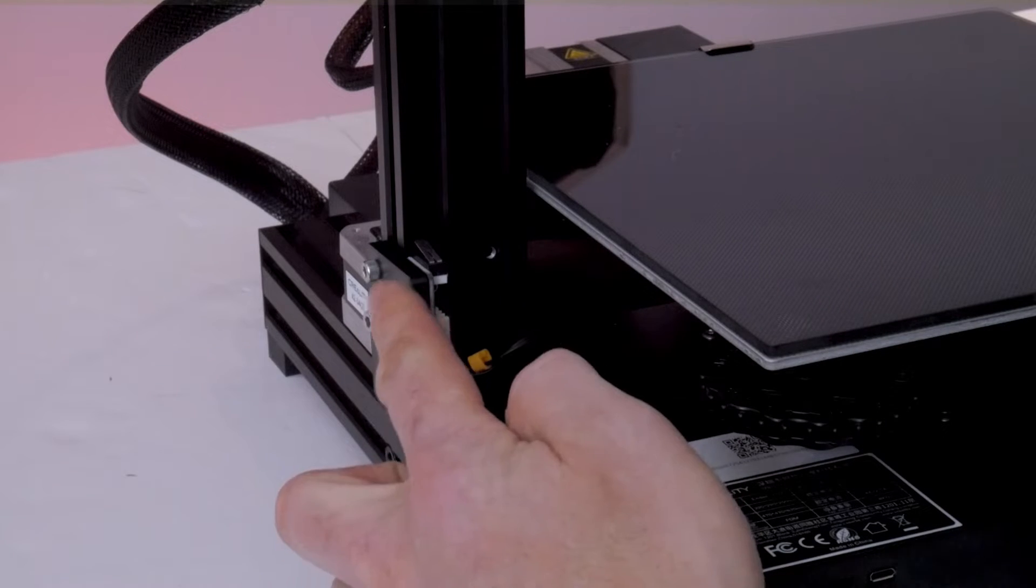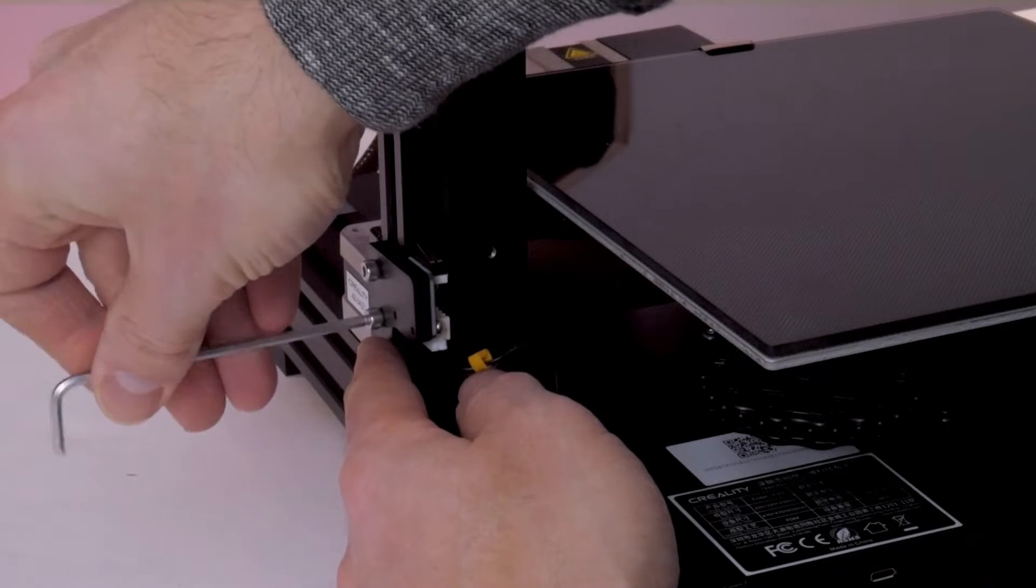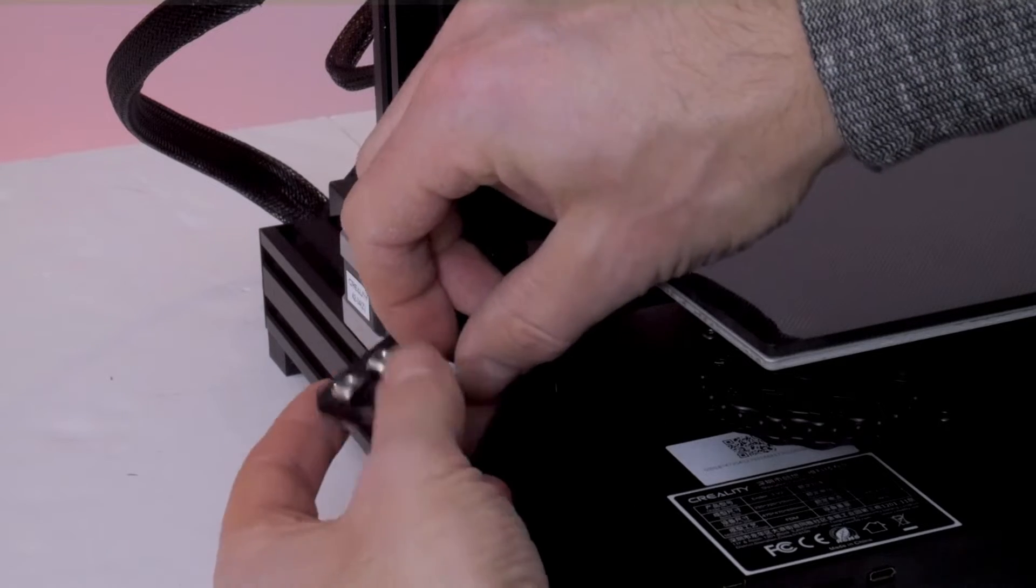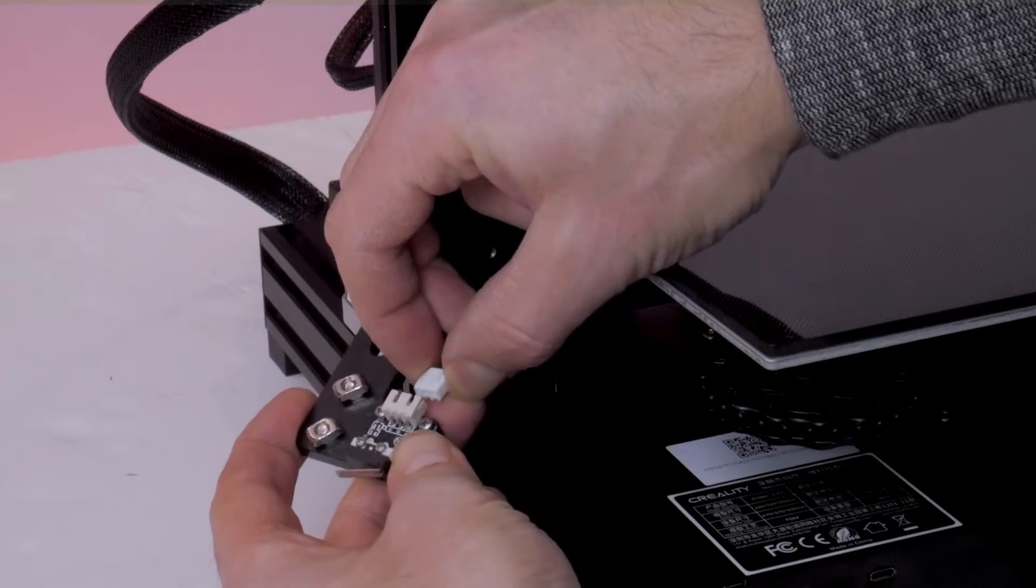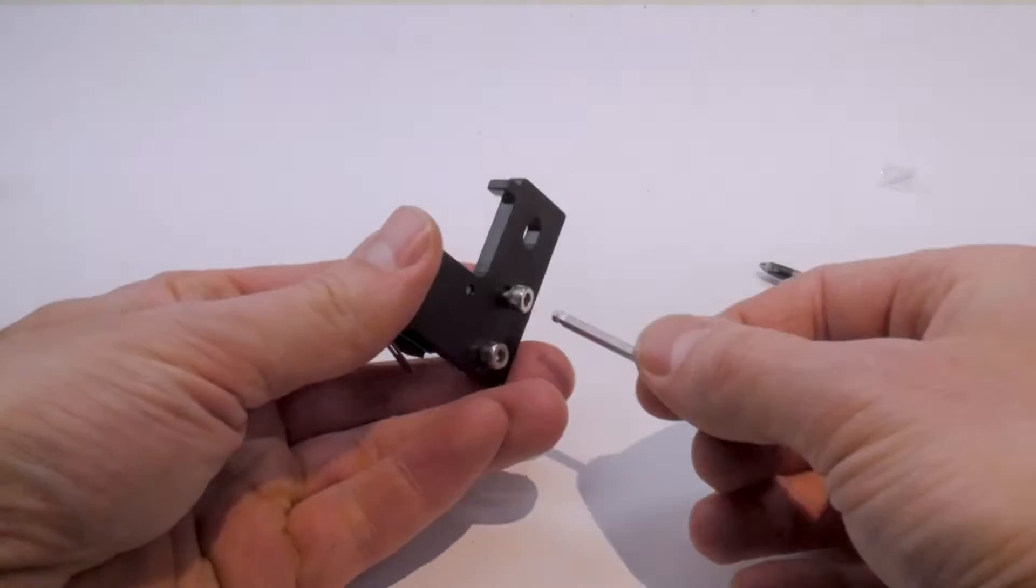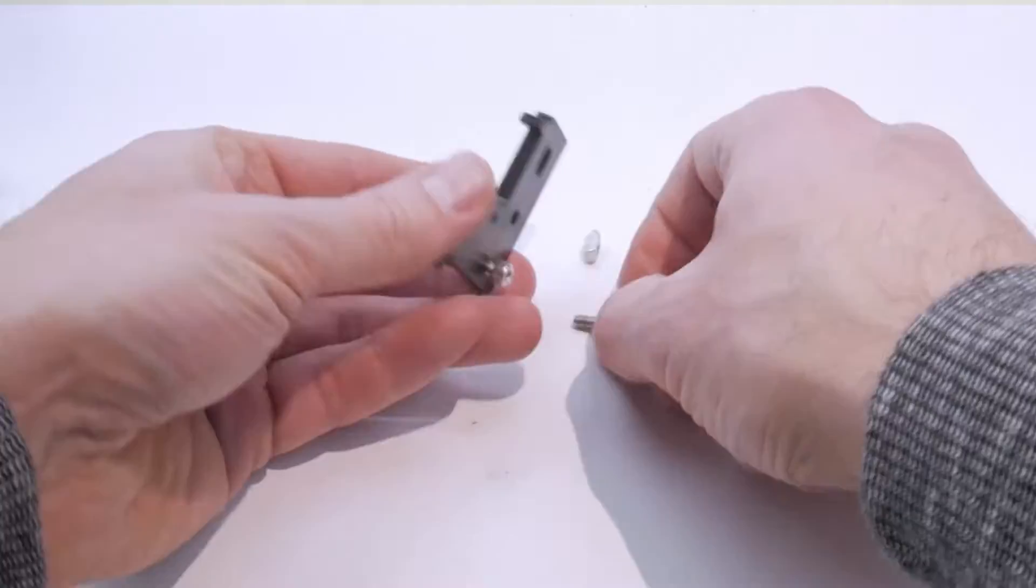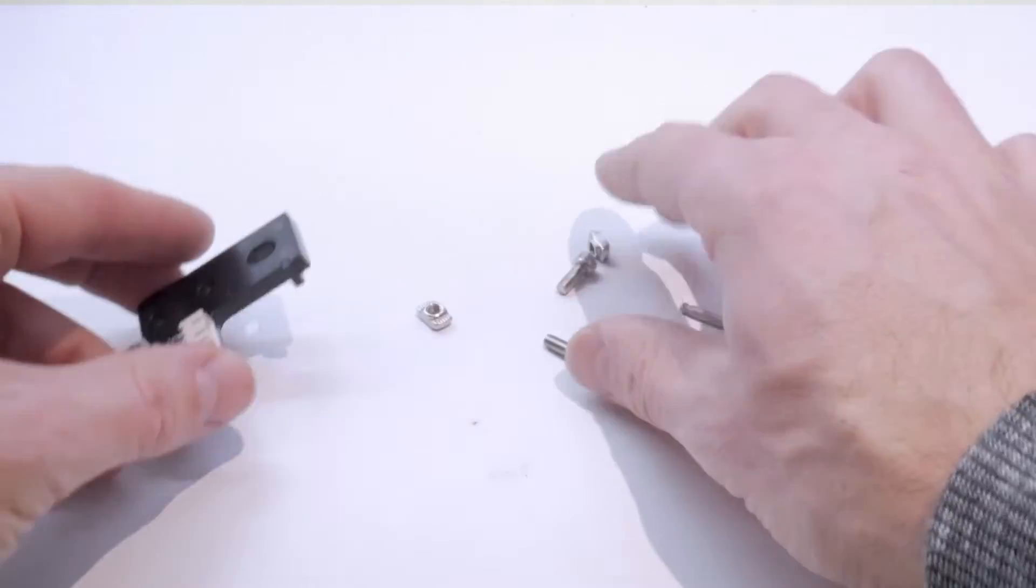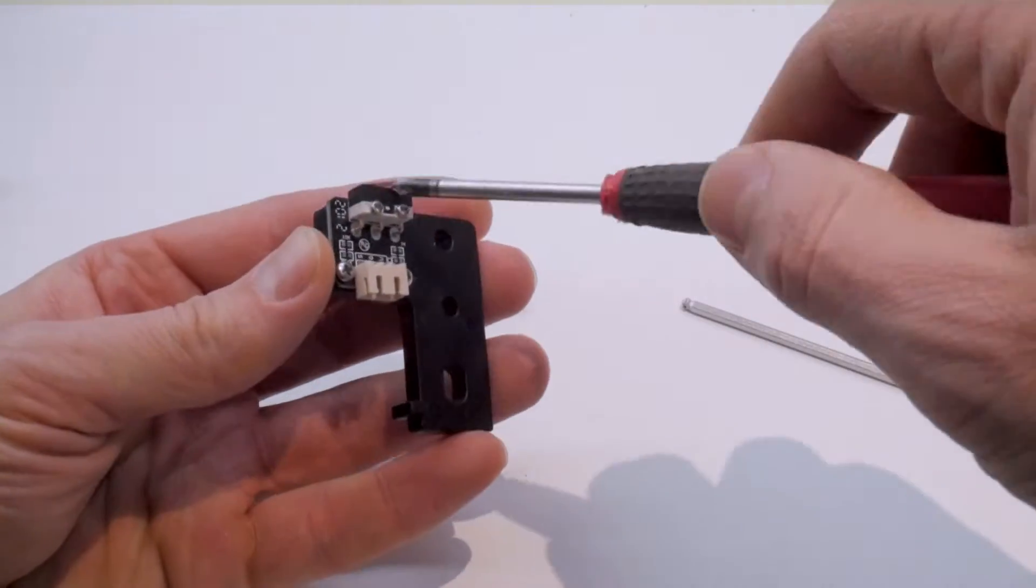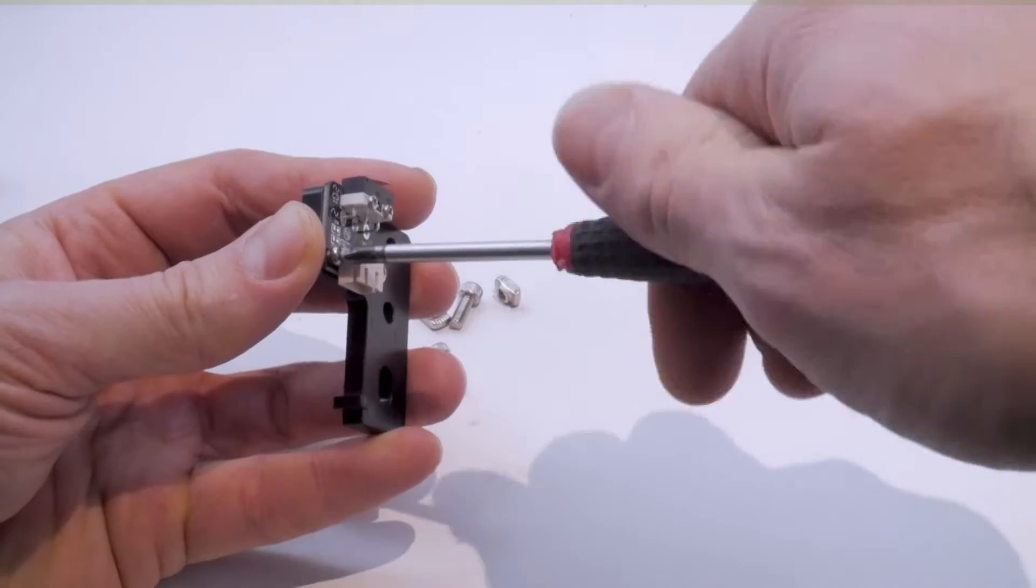Getting rid of the original mount is very easy. There are two socket head cap screws clearly visible on the side of the mount - simply loosen those off and the whole thing will pop right off. Remove the electrical connector and it's been removed. You'll want to completely remove those socket head cap screws and the T-nuts because we're going to be reusing them.